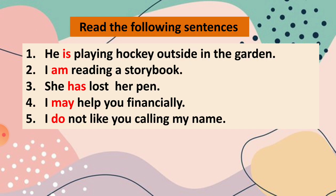Read the following sentences. He is playing hockey outside in the garden. I am reading a storybook. She has lost her pen. I may help you financially. I do not like you calling my name. Here, is, am, has, may, do are the helping verbs and they are used with the main verbs playing, reading, lost, help, like in the sentences respectively.